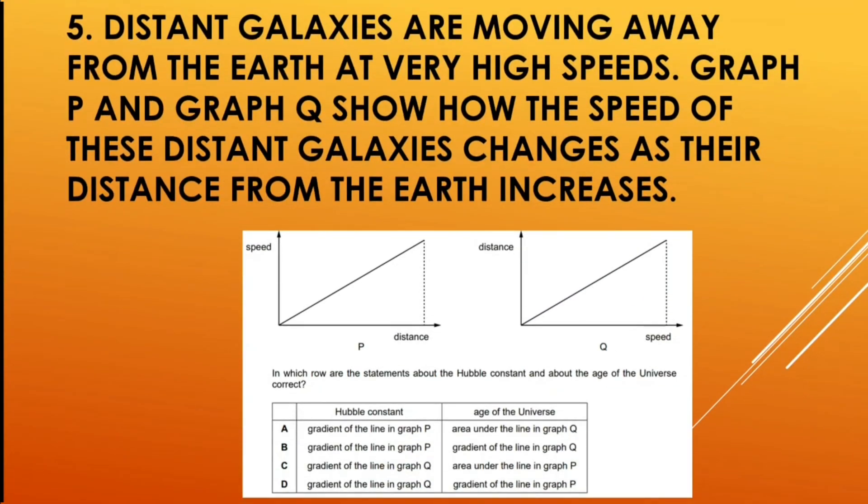In this question, distant galaxies are moving away from the earth at very high speeds. Graph P and graph Q show how the speeds of these distant galaxies changes as their distance from the earth increases. In which row are the statements about the Hubble constant and about the age of the universe correct? And the correct option is option B.